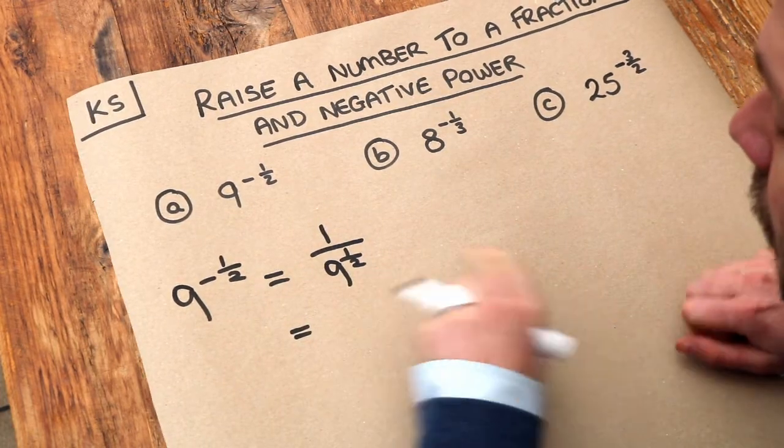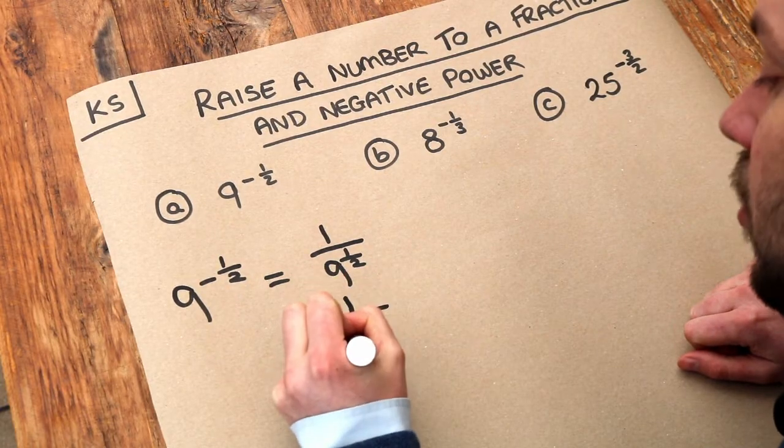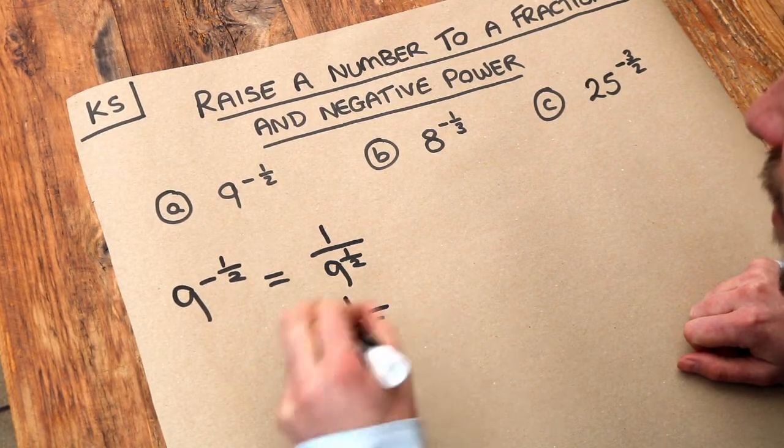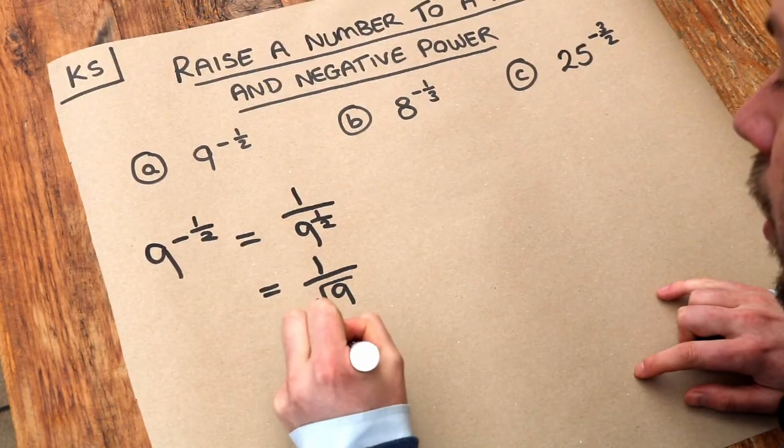And then how do we do 9 to the power of a half? Remember that 9 to the power of a half just means the square root of 9. We saw that in the previous video. And the square root of 9 is 3, so it's 1 over 3.